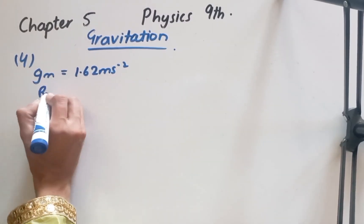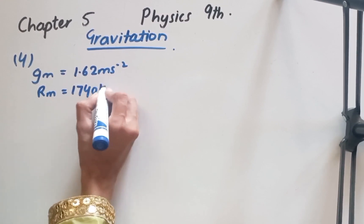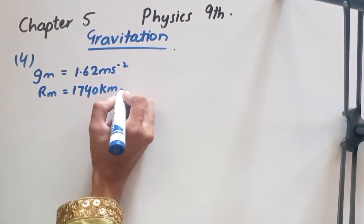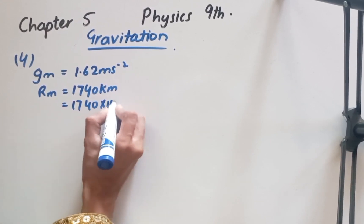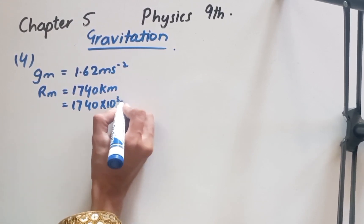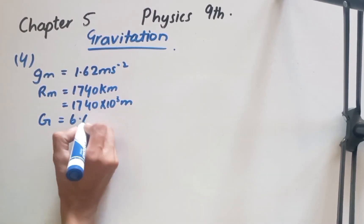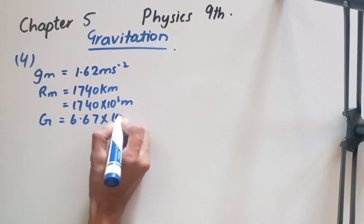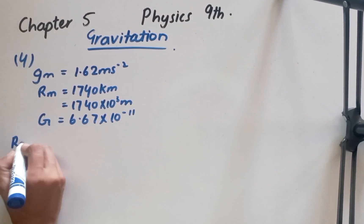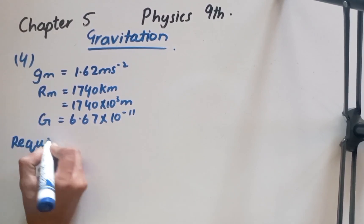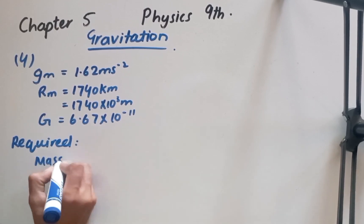The given data for numerical number 4 is: gravitational acceleration of the moon, which is 1.62 m/s²; radius of the moon, which is 1740 km, converted to 1740 × 10³ meters; and the gravitational constant G, which is 6.67 × 10⁻¹¹. The required value in this numerical is the mass of the moon.